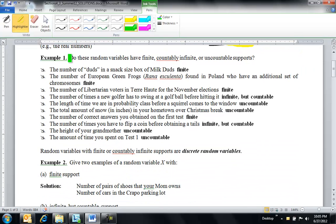So maybe examples would help best. Here's some that we looked at in class. Back to Milk Duds again, I'm still stuck on those. Number of Milk Duds in a snack size box - there's only going to be a finite number, and so your support would only have maybe 0, 1, 2, 3, 4, 5. Number of frogs with an additional set of chromosomes - again, finite. There's only so many of these frogs, and only so many of them would have this extra chromosomes. Number of Libertarian voters in Terre Haute in November - maybe 0, 1, 2, 3, but it's going to end somewhere, right? There's a nice finite number.